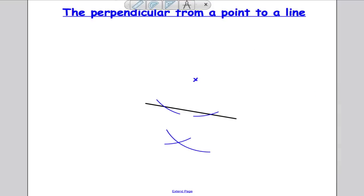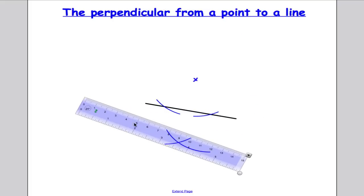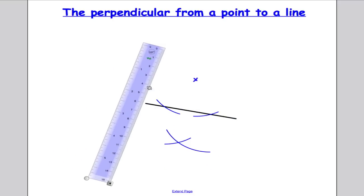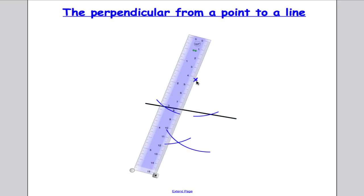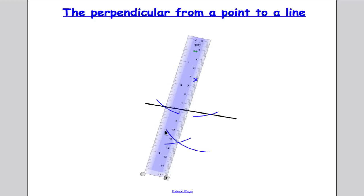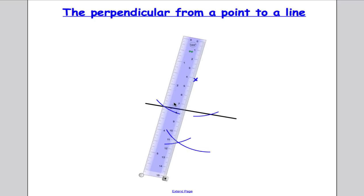Take out your ruler. We've got to take out our ruler and we want our ruler to go through the point that was given and the place where the arcs crossed. So just getting this as accurate as possible. That looks about right.